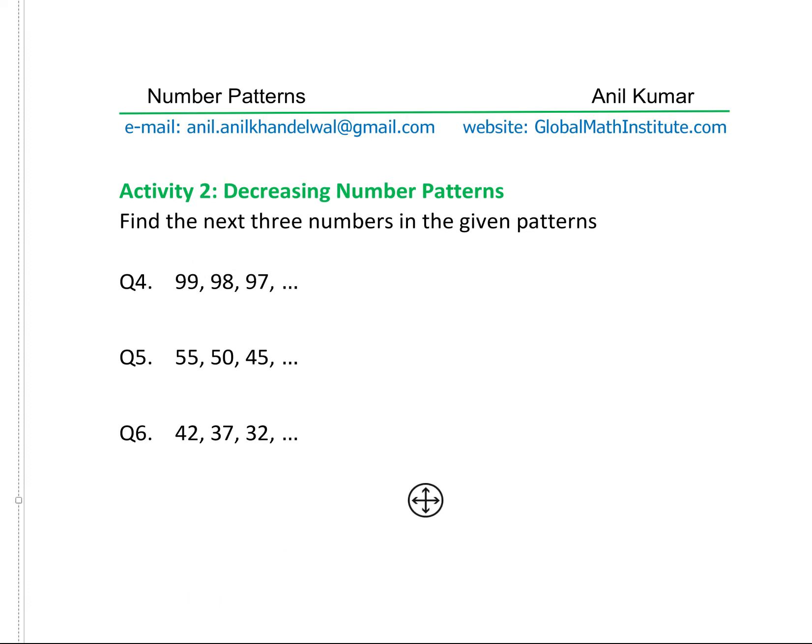Question number 5: 55, 50, 45 are your numbers. What we notice here is that it is 5 less each time. Let's describe this series: we are starting at 55, and once we start at 55 we subtract 5 each time. So 55, 50, 45 — 5 less will be 40, then 35, then 30. And that's how it goes.